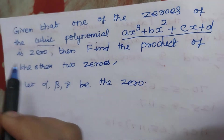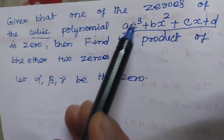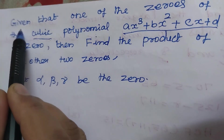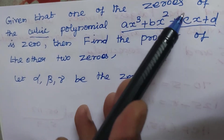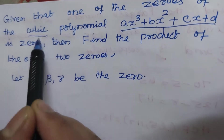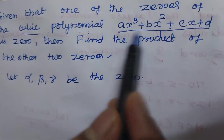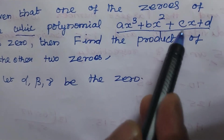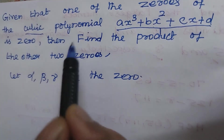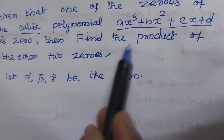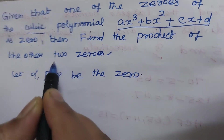Hi, I am Imal Aswat. Now I am going to teach for 10th standard. Given that one of the zeros of the cubic polynomial Ax³ + Bx² + Cx + D is 0, then find the product of the other two zeros.